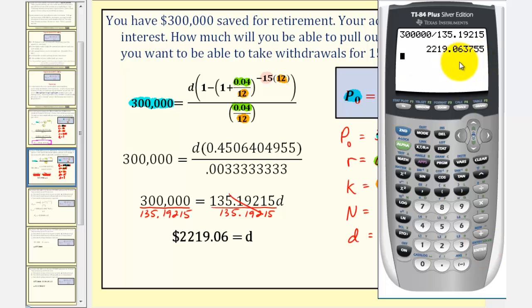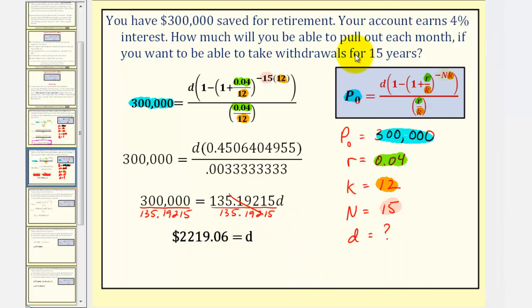Rounding to the nearest cent, D is equal to $2,219.06, which means under these conditions, you'd be able to withdraw $2,219.06 every month for 15 years.